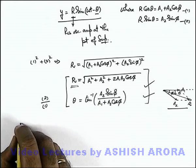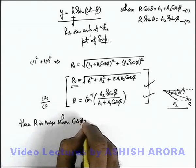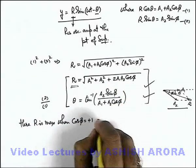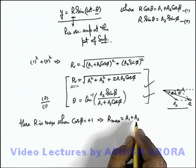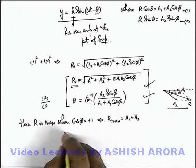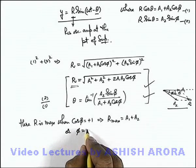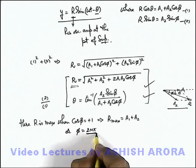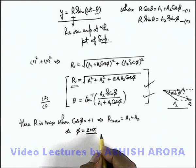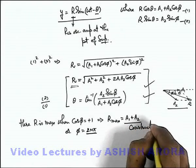In this expression, r is maximum when cos phi = +1. Substituting this, the maximum amplitude is a1 + a2. This occurs when phi = 2n pi, meaning the 2 waves are in the same phase. This is the situation we call constructive interference.